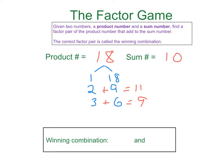I don't see any other factor pairs. So it turns out, in this case, that there actually is no winning combination. You can write none, or you can write no winning combination. This can happen. It's possible that the factor game has no winning combination, and here's an example of it.